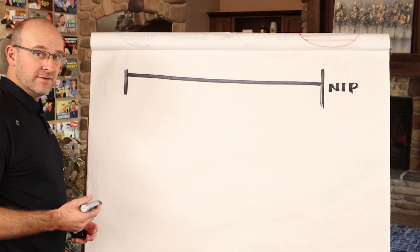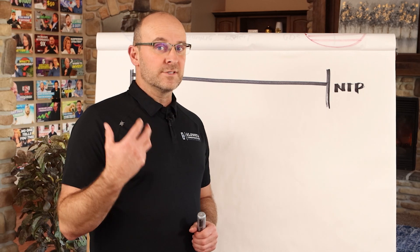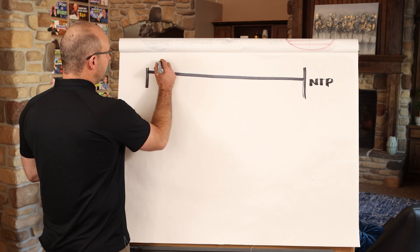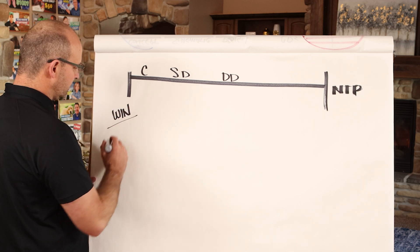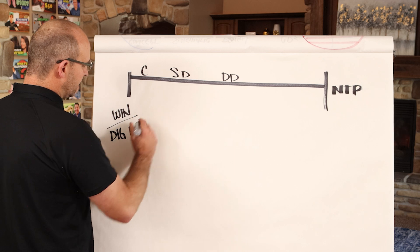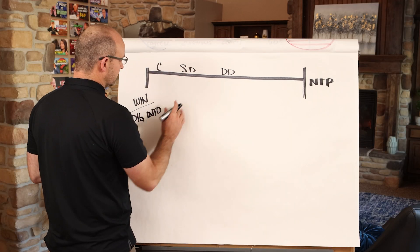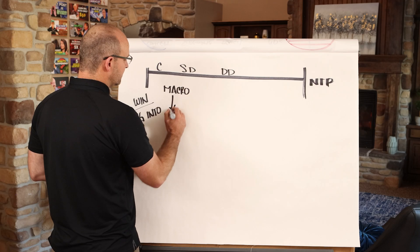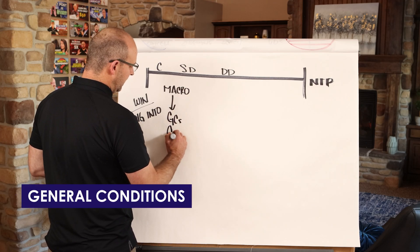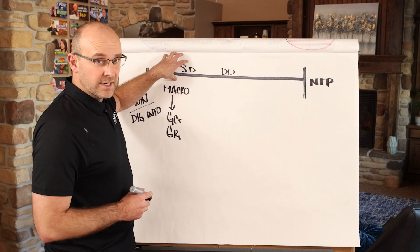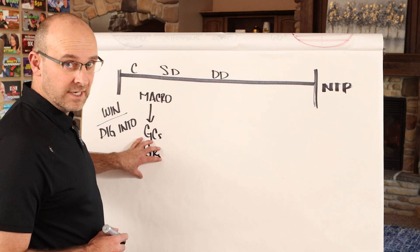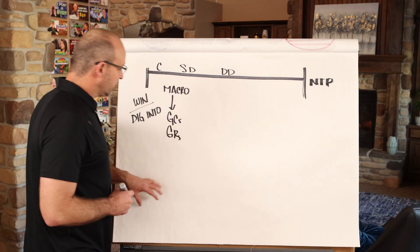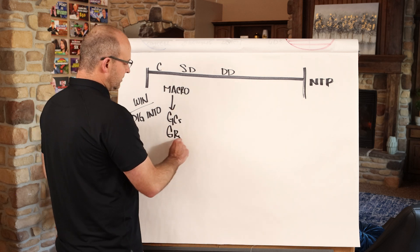Throughout the pre-construction timeline you have high-level focuses. When you're in the concept design and schematic design phase — before design development — not only are you working to win the job, but you should dig into the project and find key things. What we really want to do in this phase is come up with a macro-level attack plan to make sure that your general conditions and general requirements are estimated. You don't want to underestimate these, so that designers think they can keep adding scope without accounting for the money needed to manage the project.